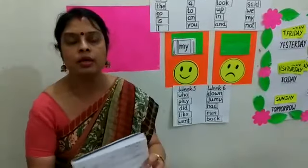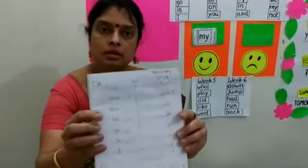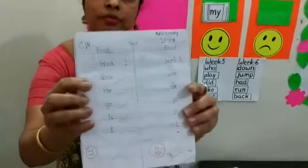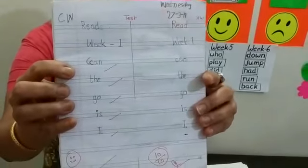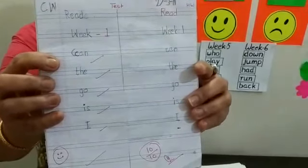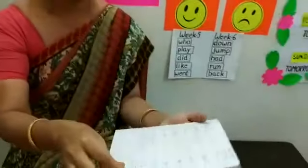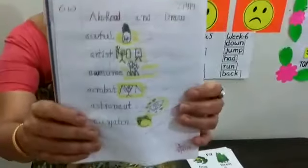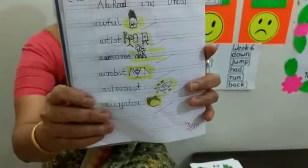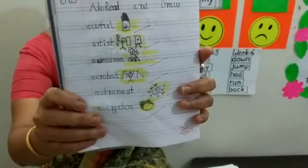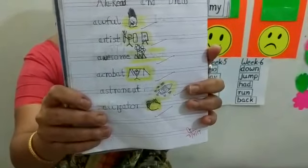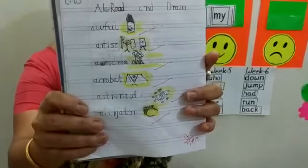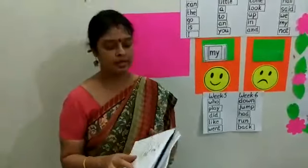So here I am going to show you only one example — this is Week One. You write how you have to write, then the A words, and then you read and draw pictures. Same way you have to do the rest of the words.